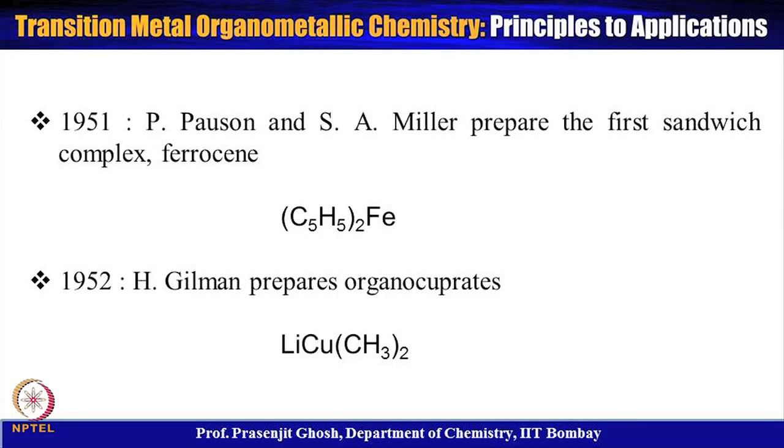Metal olefins are important intermediates in various catalytic reactions. In 1951, P. Pauson and S.A. Miller prepared the first sandwich complex in the form of ferrocene, which is dicyclopentadienyl iron. Prior to that, it was extremely difficult to believe how two cyclopentadienyl ligands would attach to a metal center. Ferrocene is a very stable molecule, and its overall stability arises from the 18 valence electrons at the metal center.